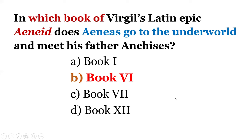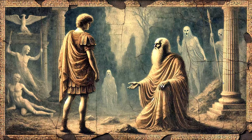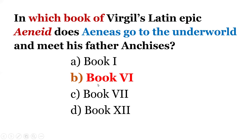This episode is very important because it becomes an epic tradition — if you write an epic about a hero, then in one of the books the hero goes to the underworld to meet someone. In Virgil's epic, the title character Aeneas goes to the underworld to meet his dead father. This is a famous episode, which is why Book 6 is significant.